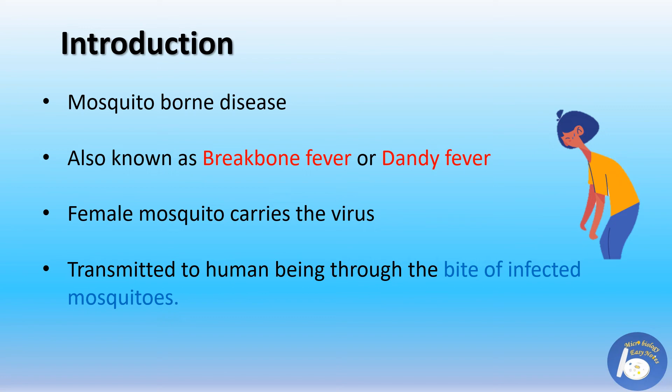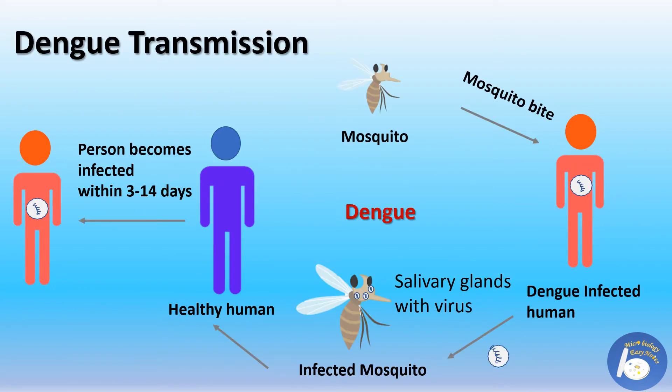The female mosquito carries the dengue virus. In dengue transmission, an uninfected mosquito bites an infected person, then the virus goes into the midgut of the mosquito and replicates there. After that, the virus reaches the salivary gland of the mosquito. When this infected mosquito bites a healthy individual, the virus enters the human body. After three to four days of infection, the human shows symptoms of dengue. A pregnant lady can also transmit dengue infection to the baby.